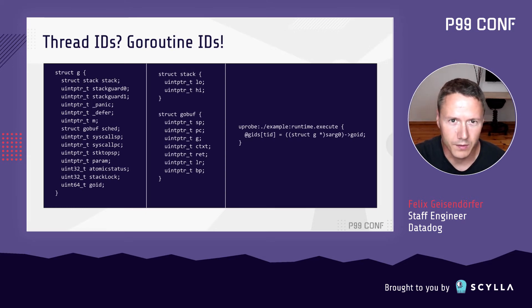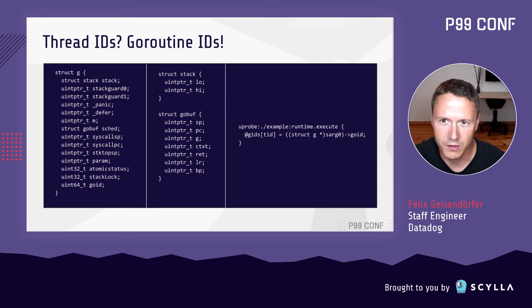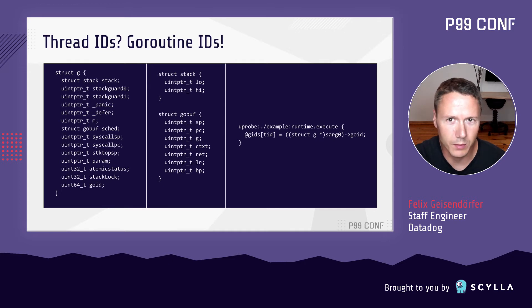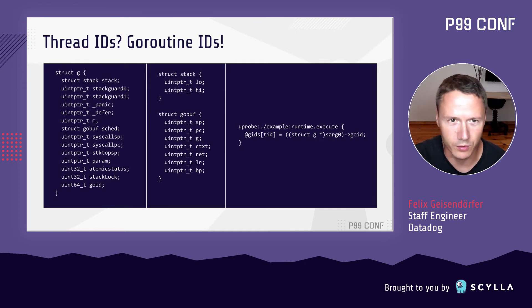Even if uretprobes were fixed, the script would still be buggy because latencies are tracked using a thread ID as a key. For Go, this would need to be a goroutine ID. Getting a goroutine ID is tricky — one way is to hack into the scheduler internals, but this is precarious and hopefully better solutions will emerge in the future.